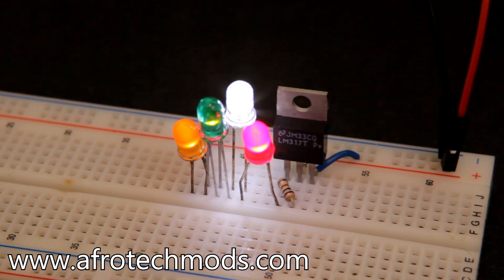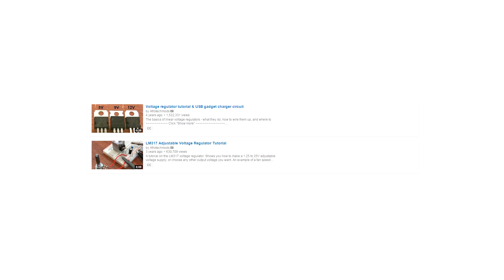Today I'm going to explain what a constant current source is and show you how to use one to safely power LEDs and laser diodes. This video builds upon material I covered in my voltage regulator tutorials, so make sure you've watched those first.